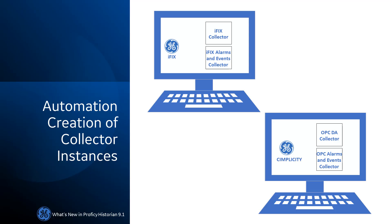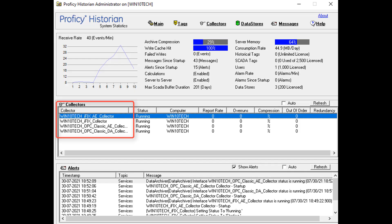Automatic creation of collector instances. When you install collectors, if iFIX is installed on the same machine as the collectors, one instance each of the iFIX collector and the iFIX alarms and events collector are created automatically. Similarly, if Simplicity is installed on the same machine as the collectors, one instance each of the OPC Classic data access and OPC Classic alarms and events collectors for Simplicity are created automatically. You can begin using these collectors or create more instances as needed.